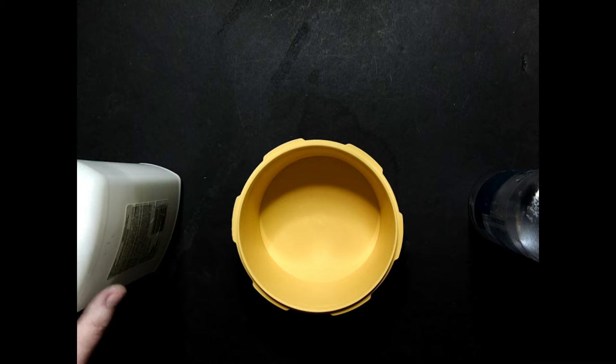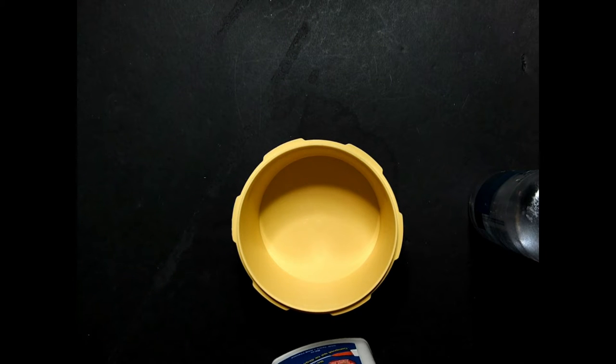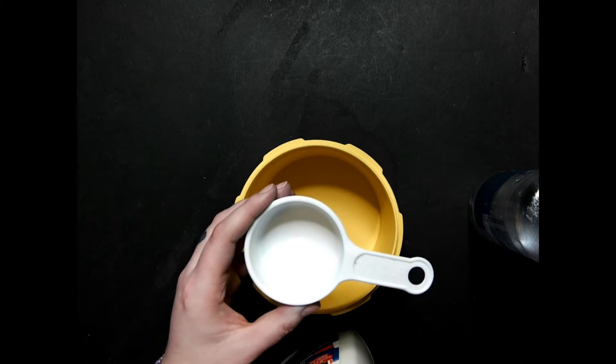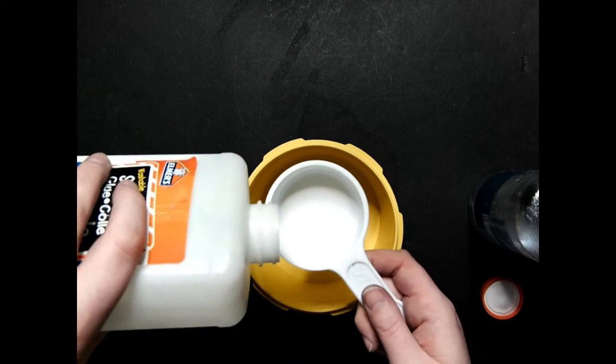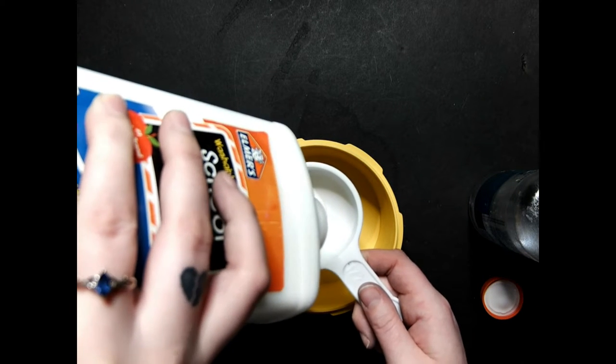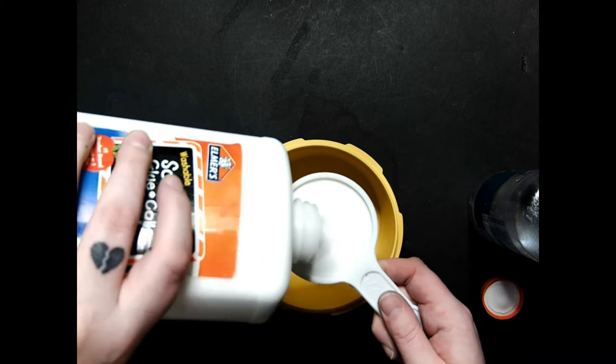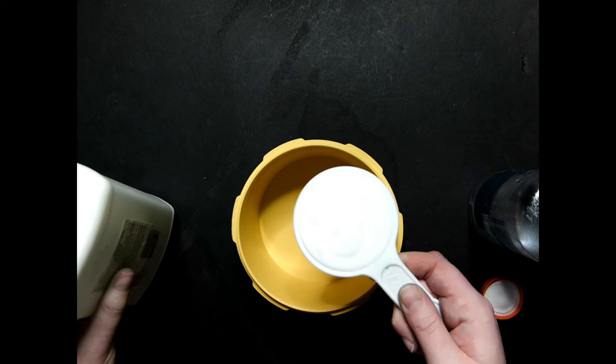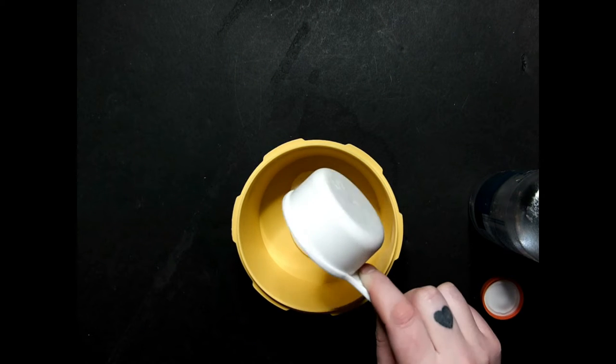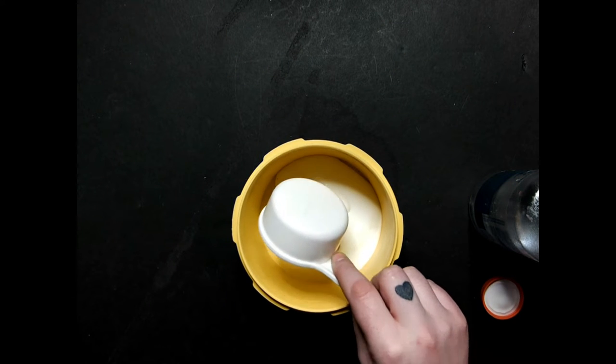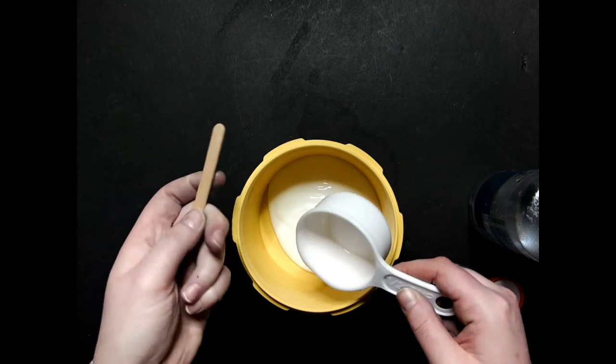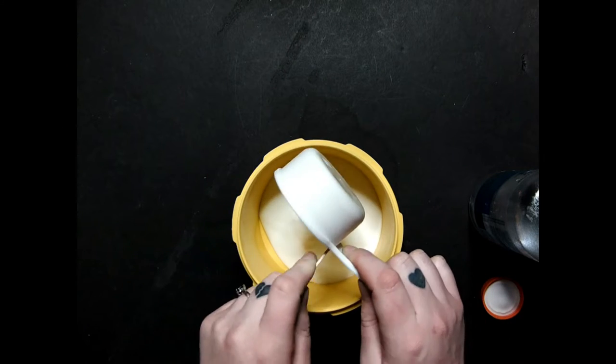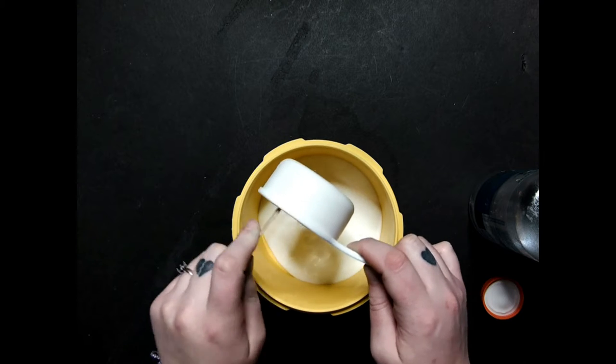For the glue you are going to need about half a cup. So I've got a measuring cup here and we will start by measuring this out. Okay so there's a half a cup of glue we are going to put into our container. I like to use popsicle sticks to mix with because they are easy and I have lots of them around.